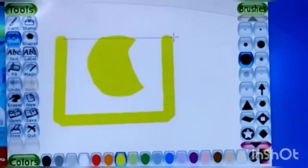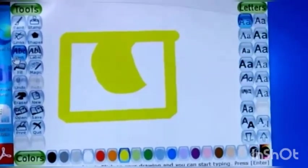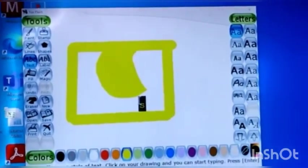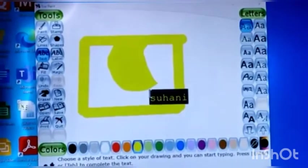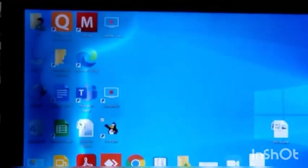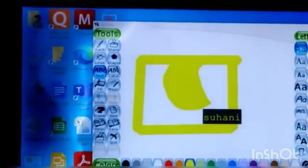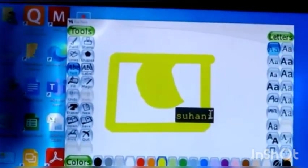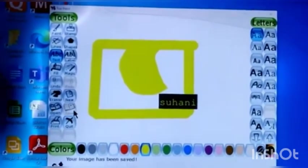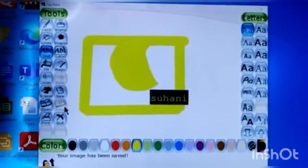Text tool is used to type text on the canvas. Suppose we want to write my name, we will use text tool. The save tool is used to save the drawing. If I want to save this picture, I will use the save tool.